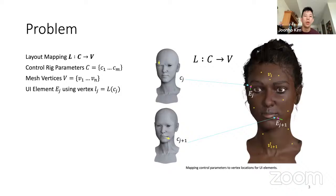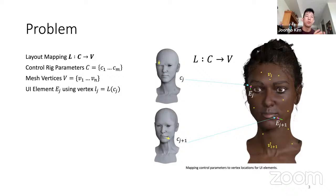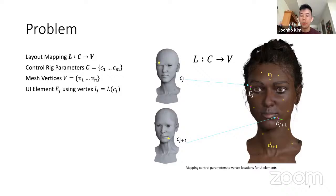So let's look at the problem. Basically it's a layout mapping problem where I want to map control rig parameters — which are deformations of your model — to a set of vertices on the face. So maybe for my eyelid, if I have a parameter that closes my eyelid, I would want to have my UI control where my eyelid is. We're trying to find this mapping of which vertex should this control rig be associated with. Then we can create the UI element that controls that parameter and anchor it to that selected vertex. For the eyelid example, we select a vertex very close to the eyelid — physically where you would move your eyelid — and put the UI element there.